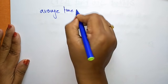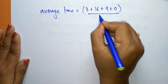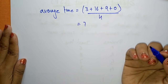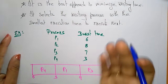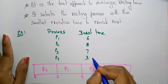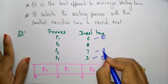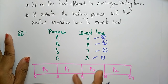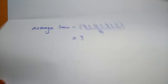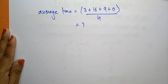The average waiting time is equal to (3 + 16 + 9 + 0) divided by 4, which gives you 7. That is how you calculate for Shortest Job First. You select the shortest job first, then second, third, and fourth. Add the completion times to find the waiting times of all processes, then calculate the average waiting time.